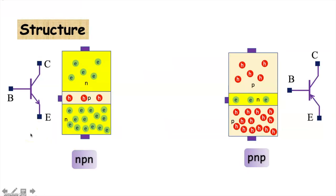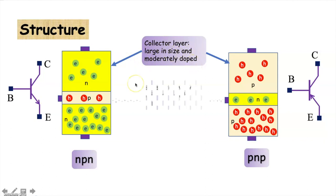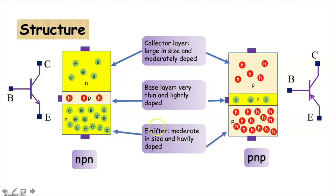The structure of a bipolar junction transistor is as shown here. It is constructed with three doped semiconductor layers separated by two PN junctions. The three layers are named as collector, emitter, and base. The collector layer is large in size and moderately doped. The base layer is very thin and lightly doped. The emitter layer is moderate in size and heavily doped. This is the structure of the NPN transistor, and this is the structure of the PNP bipolar junction transistor. This is the symbol for the NPN transistor, and this is the symbol for the PNP transistor.